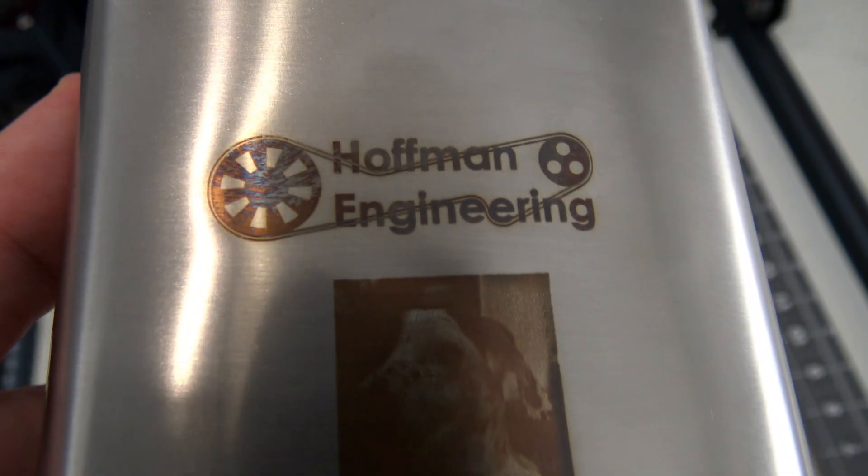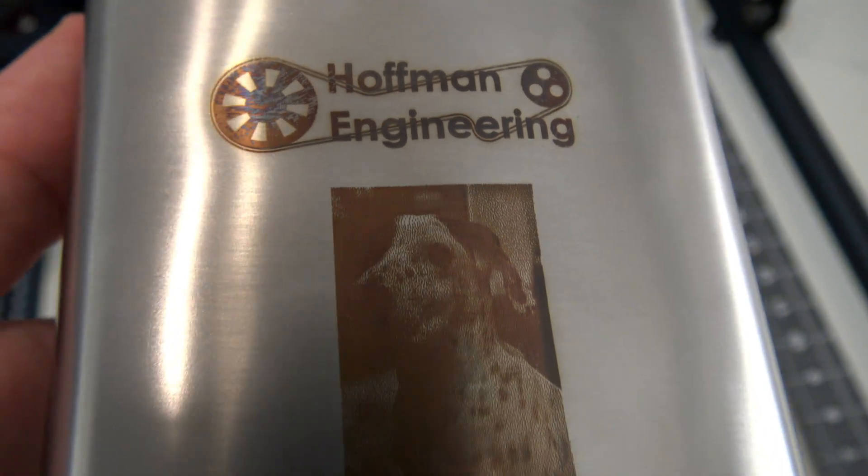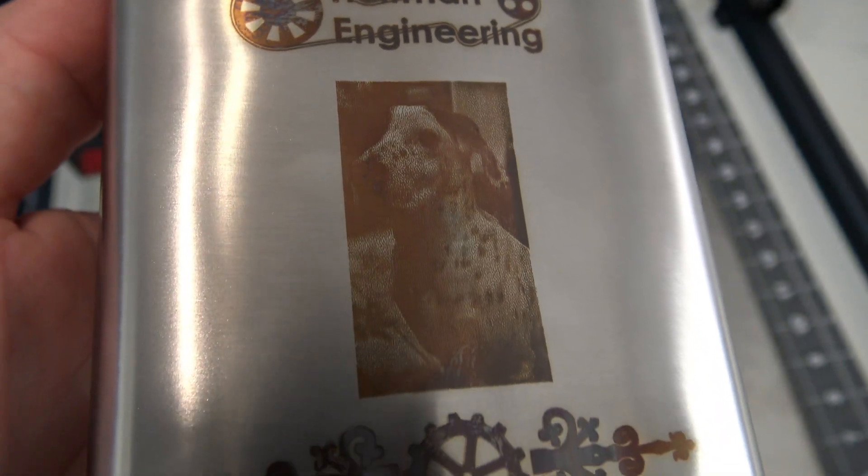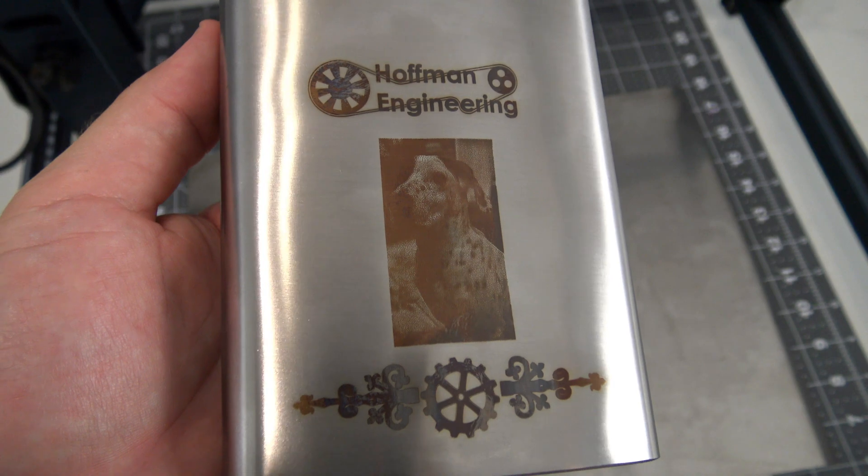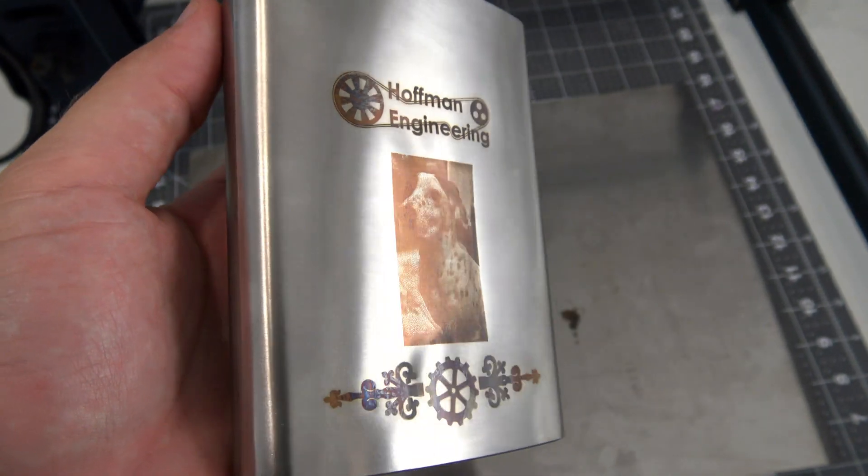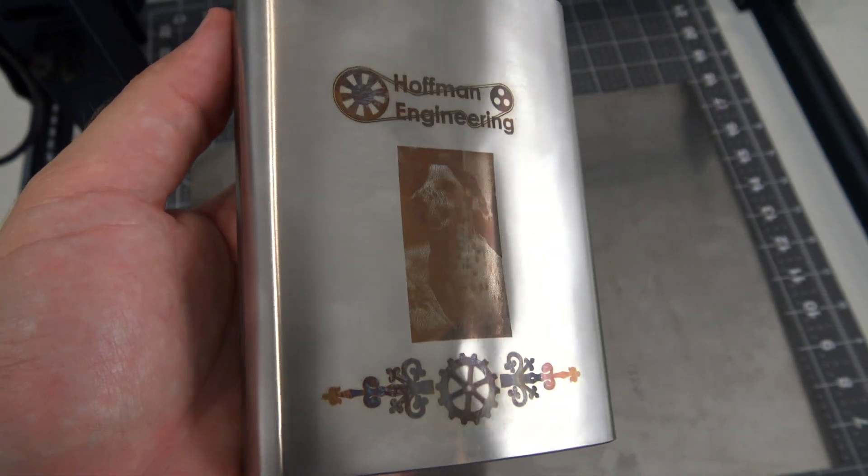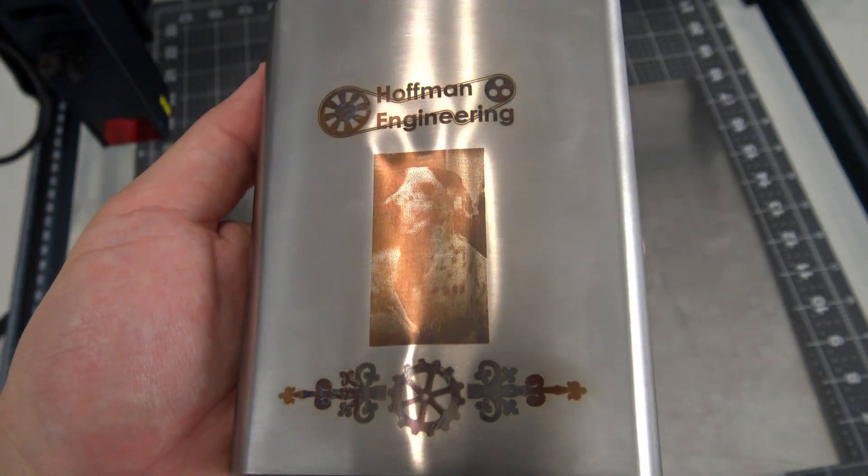However, the slow speeds meant that the metal was absorbing a lot of energy, and all that heat ended up warping the material. So if you wanted to engrave flasks, you would still need to play around with the settings to prevent warping. It can definitely handle stainless steel though.